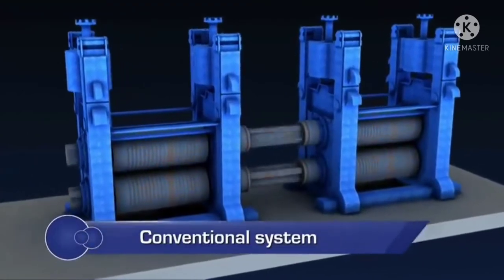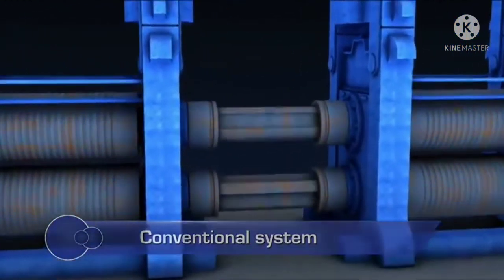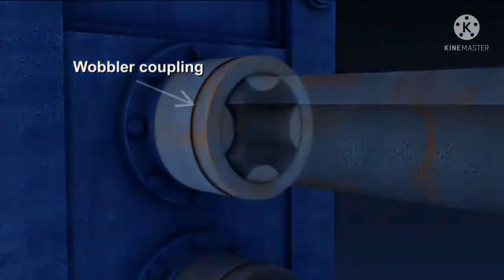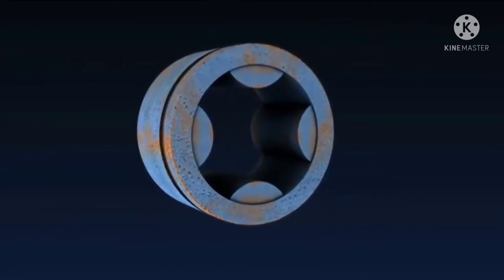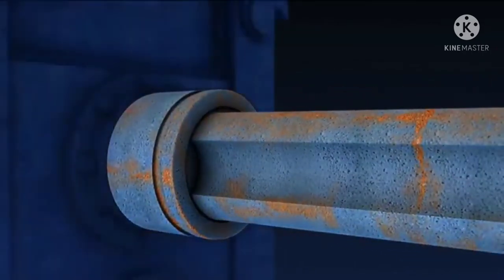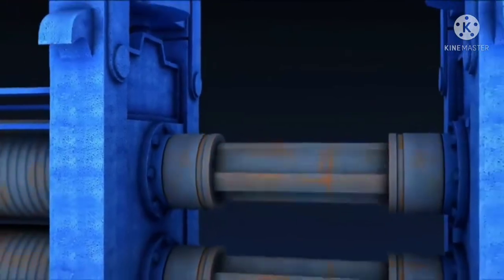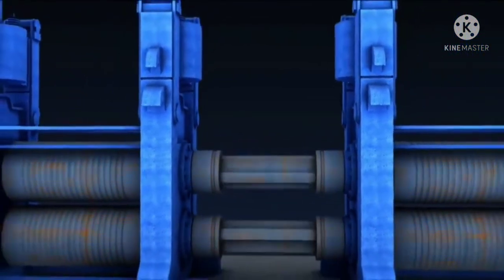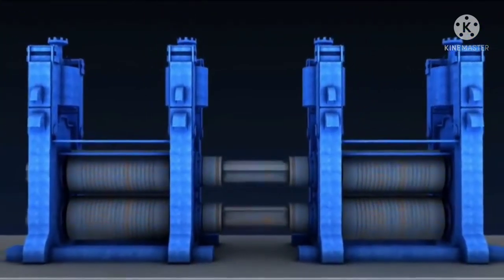Traditionally, wobblers are the most commonly used couplings in steel re-rolling mill units. These wobbler couplings are made of cast iron, either three-fluted or four-fluted, and are used in un-machined condition. These couplings are usually used with nylon or wooden packings. The roughness or improper pairing gives rise to low metal-to-metal contact. Further, the wobbler connections do not allow flexibility towards inclination from the roll axes beyond 1 to 2 degrees.